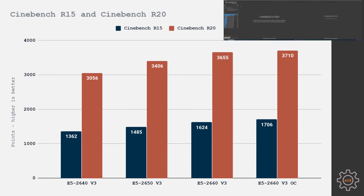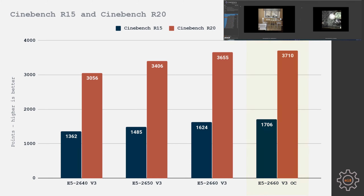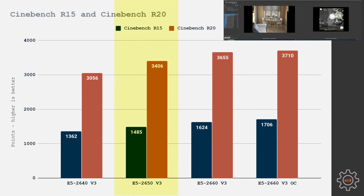Cinebench R15 and R20 results are almost identical to the CPU-Z multi-core scores. Overclocked 2660 takes first place, followed by 2660 without overclock in second, 2650 in third, and 2640 in last — since it has two fewer cores compared to the other CPUs tested.